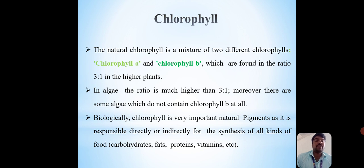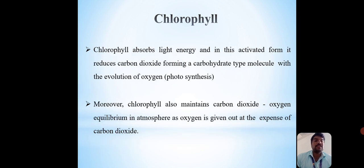Biologically, chlorophyll is very important natural pigment as it is responsible directly or indirectly for the synthesis of all kinds of foods like carbohydrates, fats, proteins, vitamins, etc. Chlorophyll absorbs light energy and in this activated form, it reduces carbon dioxide forming a carbohydrate type molecule with the evolution of oxygen. This is called photosynthesis.